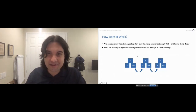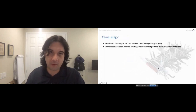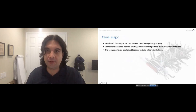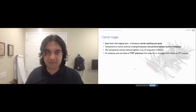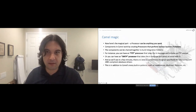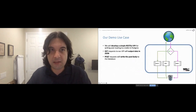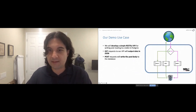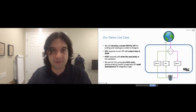The magic is that a processor can be anything you want. Components create processors that perform all types of business functions, including interacting with databases. Our use case is a simple REST API for reading and writing to a Postgres table. GET requests will issue a SELECT against the database, marshall the results into JSON, and display it over the web — so we've got a web server, REST interpretation, database queries, and JSON transformation all happening with very little code.